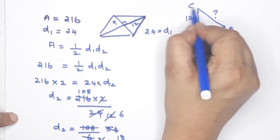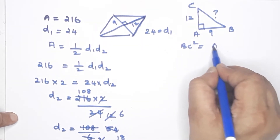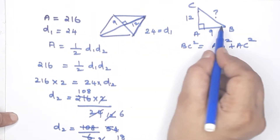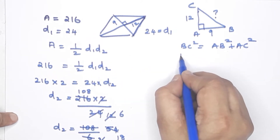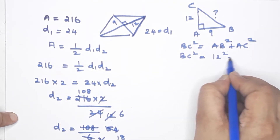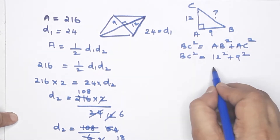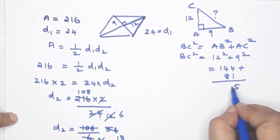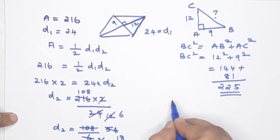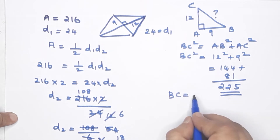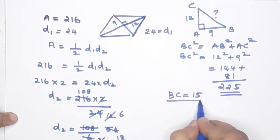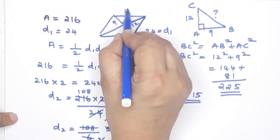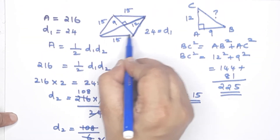Using Pythagoras on triangle ABC: BC² = AB² + AC². BC² = 12² + 9² = 144 + 81 = 225. Therefore BC = √225 = 15. So one side of the rhombus is 15 centimeters.